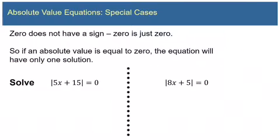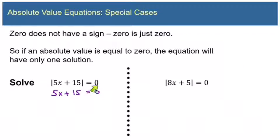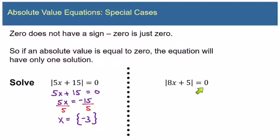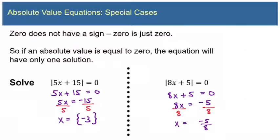Most of the time absolute value equations give us two solutions, but if the right side equals zero, we'll only get one solution, because zero does not have a sign. For absolute value of 5x plus 15 equals 0, we take the bars off and only have one equation — just 0, not positive 0 and negative 0. Solving gives x equals negative 3. Similarly, if absolute value of 8x plus 5 equals 0, then 8x plus 5 equals 0, so 8x equals negative 5, and x equals negative 5 over 8.